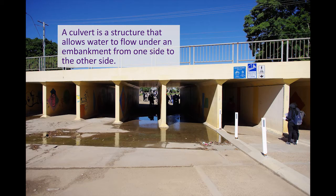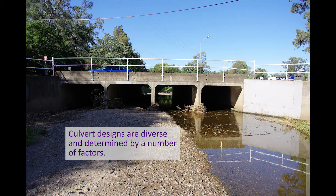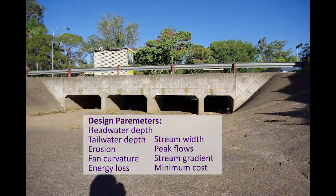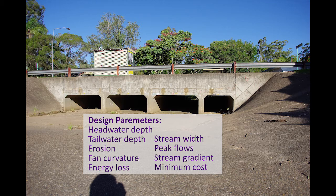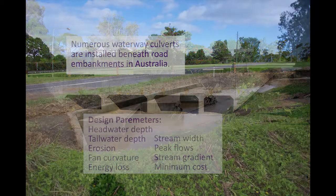A culvert is a structure that allows flood water to flow under a road or any embankment from one side to another. Culverts are designed in many different shapes and sizes depending on the head and tail water depth, erosion, fan curvature, energy loss, stream width, peak flows, stream gradient, and minimum cost.